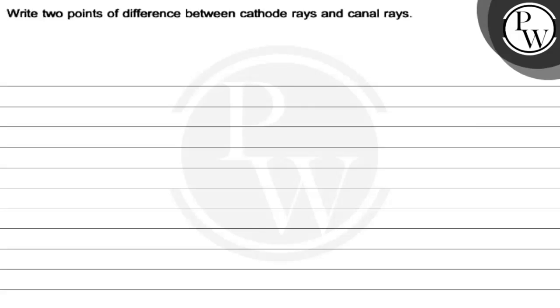Hello, let's read the question. The question says: write two points of difference between cathode rays and canal rays. So, cathode rays and canal rays can be different.